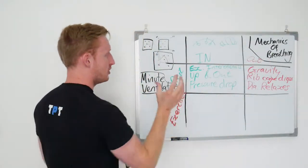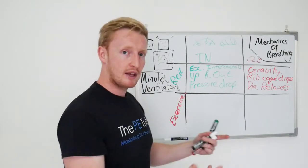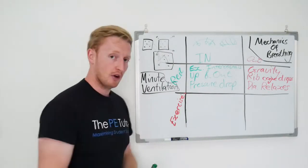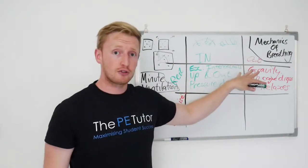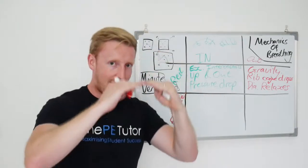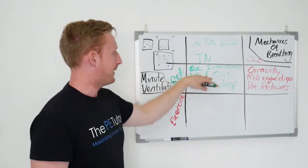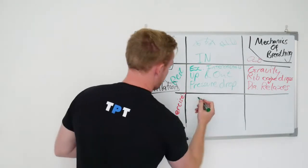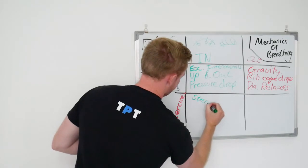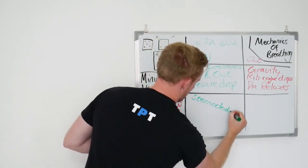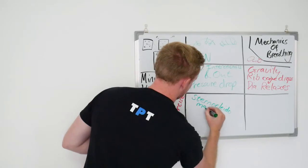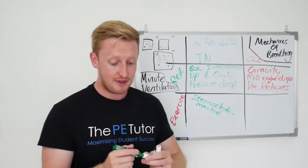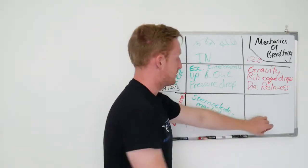The way that we do that is by changing the mechanics of our breathing so that we can achieve bigger breaths and faster breaths. So we'll start off with inhalation during exercise. We've still got the external intercostals contracted, we've still got the diaphragm flattening and we've still got this upward and outward movement and the pressure drop. That all stays the same. What we've now got though is a pretty big word here, sternocleidomastoid.